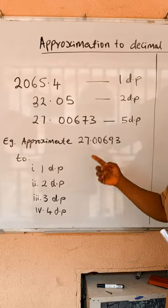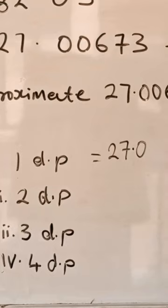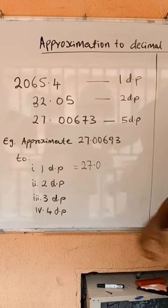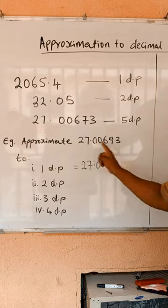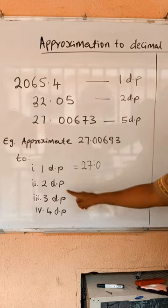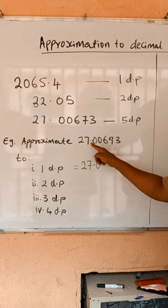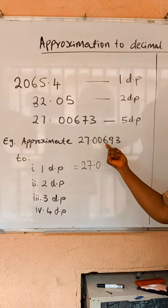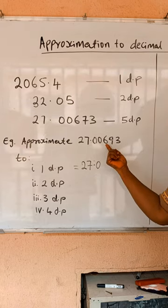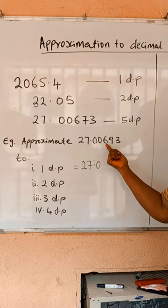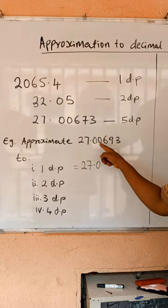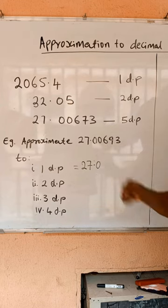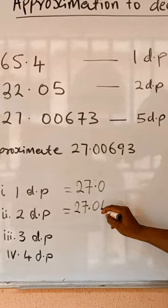For two decimal places, from the decimal point you count one, two. The next digit is six — it is up to five — so you round it up by taking one from it and adding it to the previous digit.